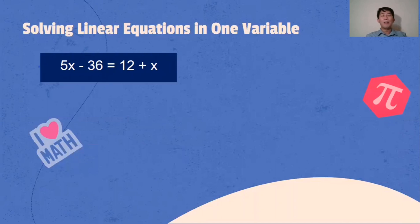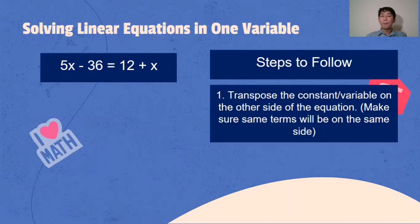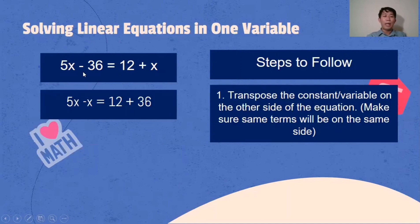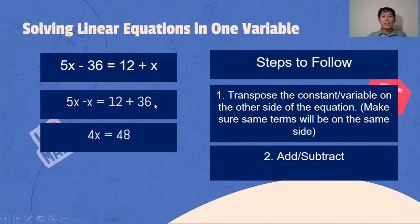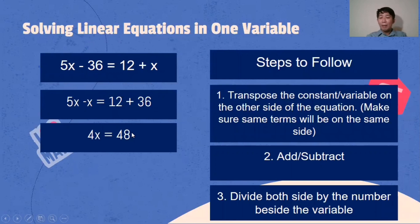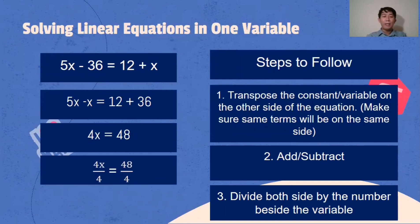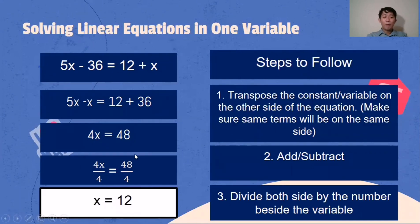Another example: 5x - 36 = 12 + x. Transpose x to the other side — it becomes negative x. Transpose negative 36 to the other side — it becomes positive 36. Then add or subtract: 5x minus x is 4x; and 12 plus 36 is 48. So 4x = 48. Divide both sides by 4: 4x divided by 4 is x; 48 divided by 4 is 12. Our final answer is x = 12.